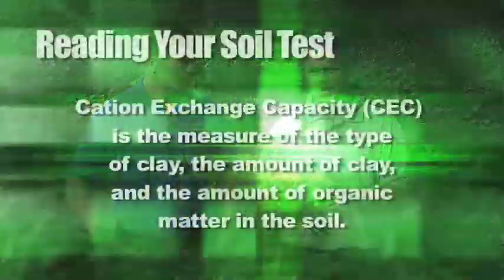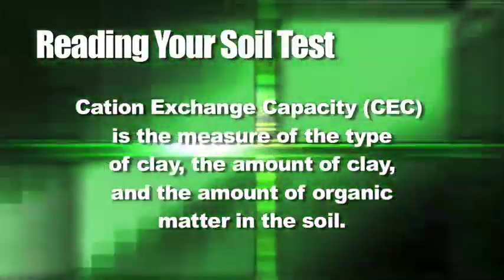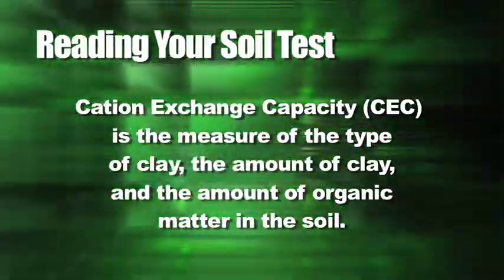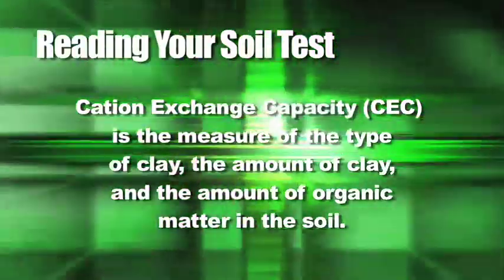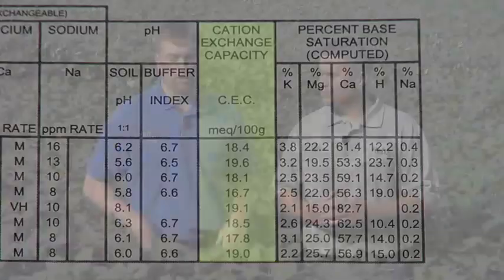Soil pH is super important. Next, we're going to talk about cation exchange capacity — the next thing to look at on your soil test. Cation exchange capacity is a measure of the type of clay, the amount of clay, and the amount of organic matter in your field. It basically tells you the holding capacity of your soil — its ability to hold water, nutrients, chemicals, and fertilizer.